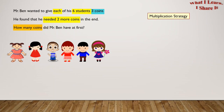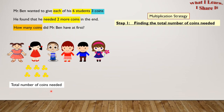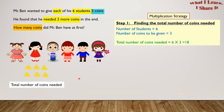Multiplication strategy. Step one: finding the total number of coins needed. We have six groups of three coins. Can you tell me what will be the total using the multiplication rule? Right. It is six times three, which is 18. So let's write it in a proper way. Number of students equals six. Number of coins to be given equals three. So the total number of coins needed equals six times three, which is 18.